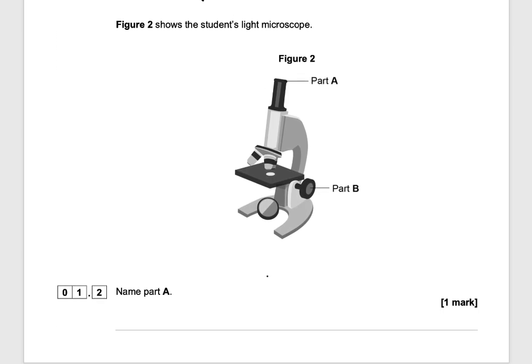Figure 2 shows the student's light microscope. Name part A. Part A is known as the eyepiece lens.